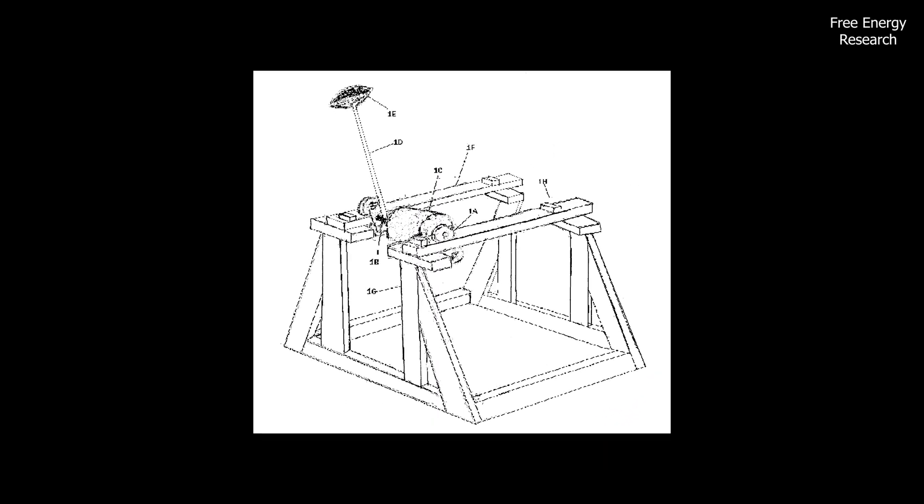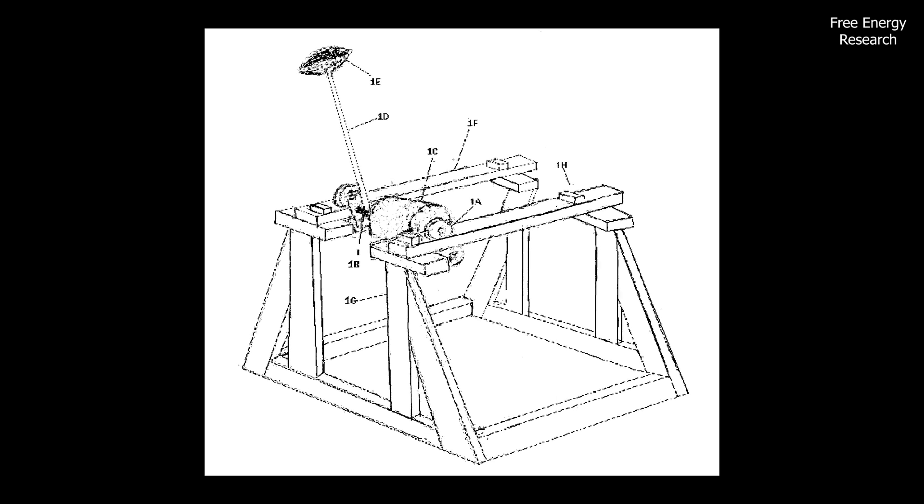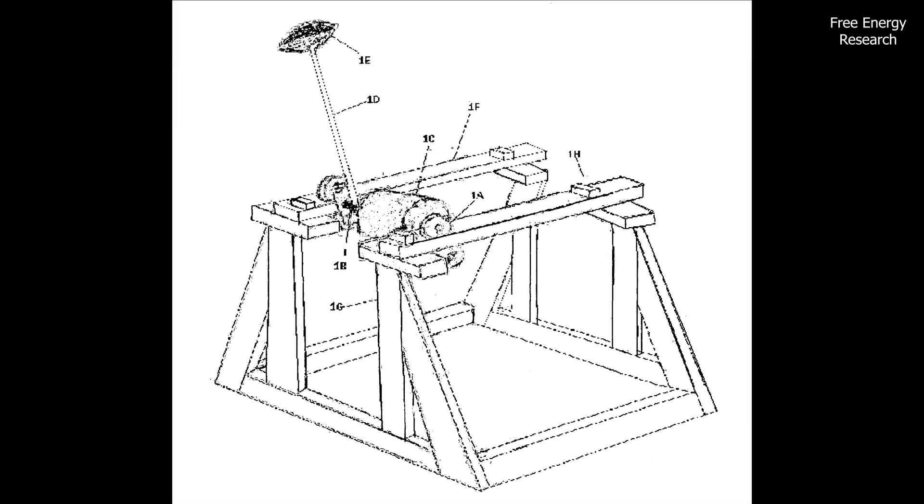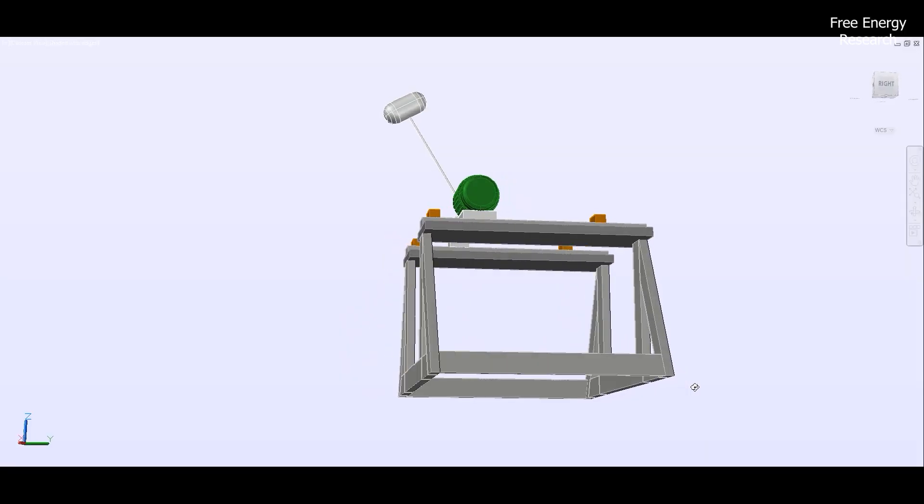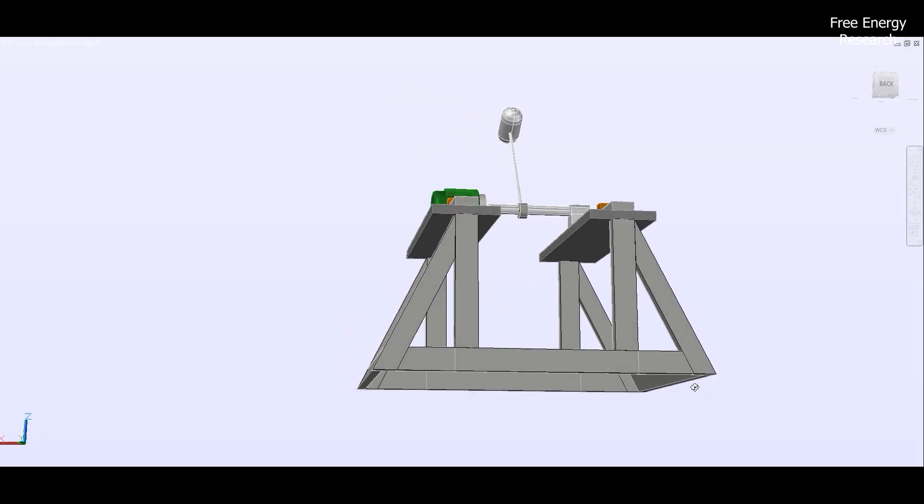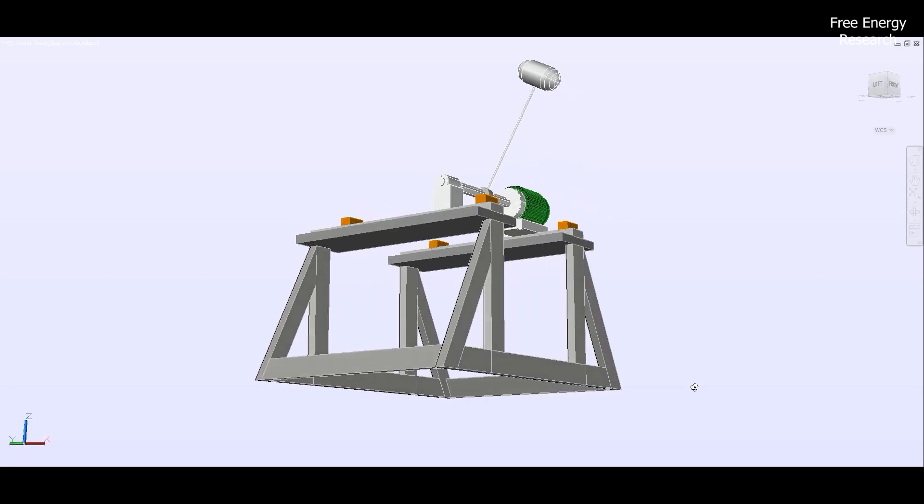Picture this: a graceful pendulum suspended from a solid lever, connected to a robust axle that houses a generator. The entire apparatus rests upon rails, forming the Kenneth Claypool gravity-propelled generator.